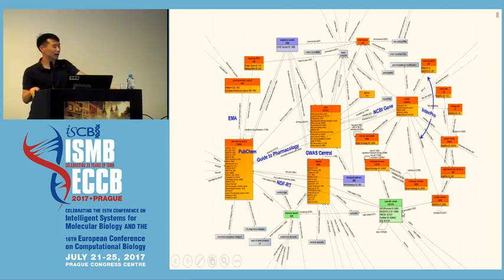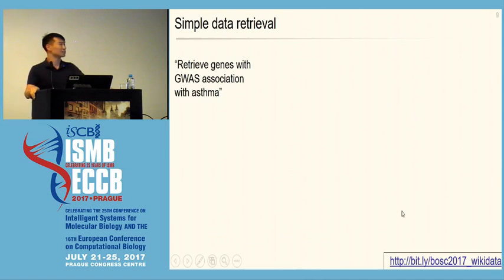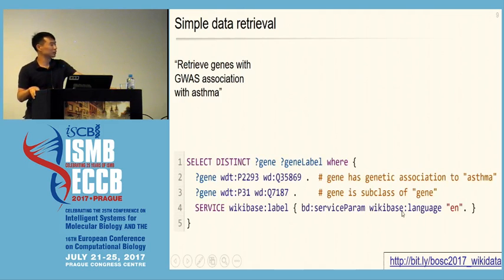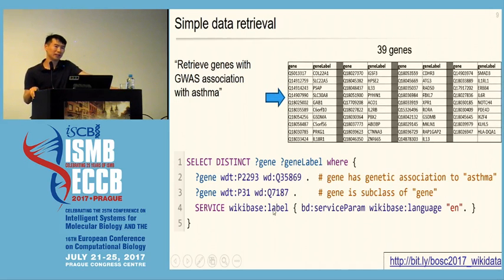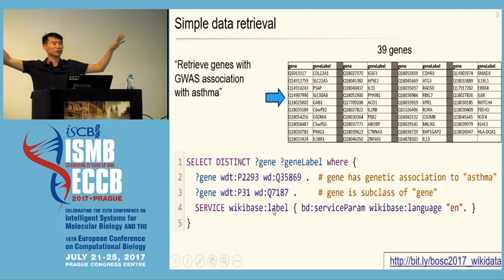All these entities are interconnected in a nice graph. What can you do with this graph? Starting with a simple example: suppose we want to retrieve all genes with a genetic association with asthma. The way you do this is using a query language called SPARQL — an SQL-like query language. The PIDs are predicates from Wikidata and QIDs represent Wikidata items — one for asthma, one for gene. This query retrieves from Wikidata the 39 genes that have been associated with asthma according to GWAS Central, demonstrating we can systematically access data loaded from other resources.